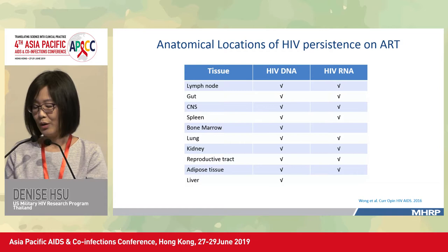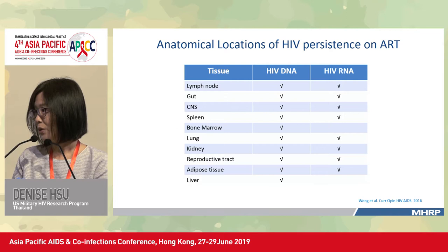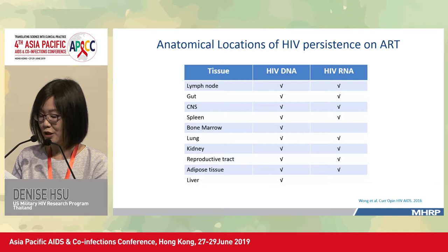HIV persistence can be identified in all types of tissue in the body. The majority of the reservoir resides in secondary lymphoid tissues including lymph nodes and lymphoid tissue in the gut, but HIV persistence has also been evident in the CNS, lungs, kidneys, reproductive tract, and even adipose tissue.